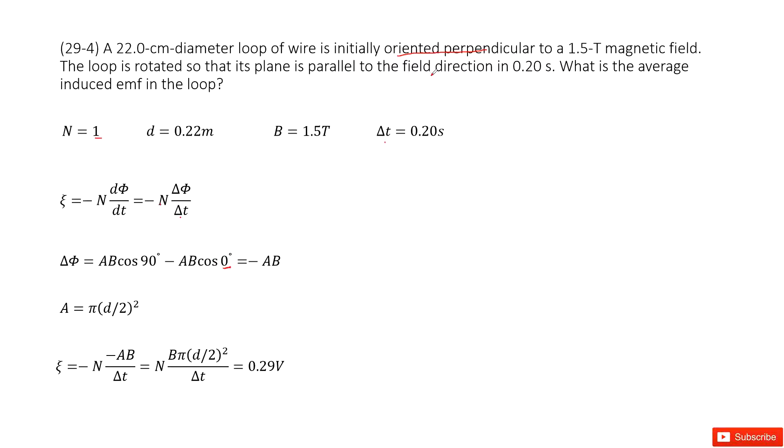Then it is parallel to the field direction, so 90 degrees. Now in this case, we write down, we can get the change of magnetic flux.